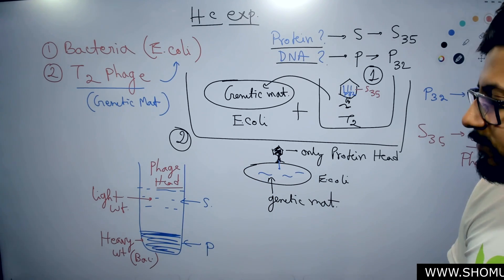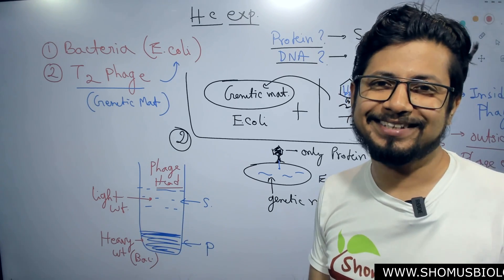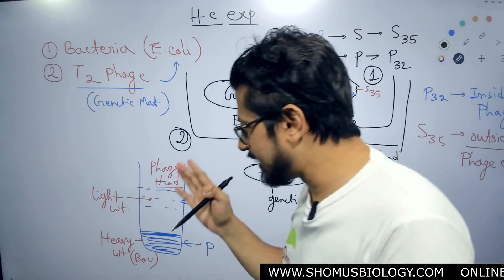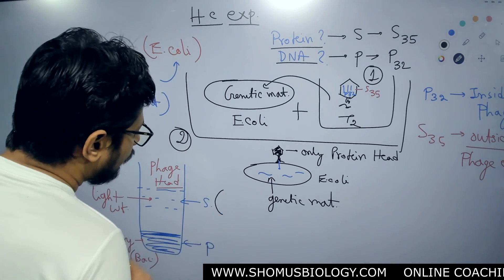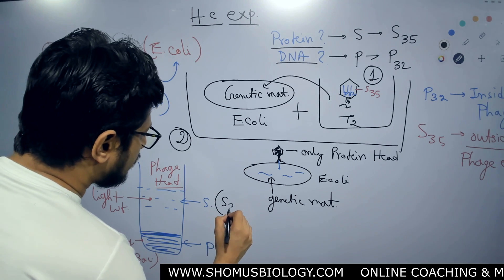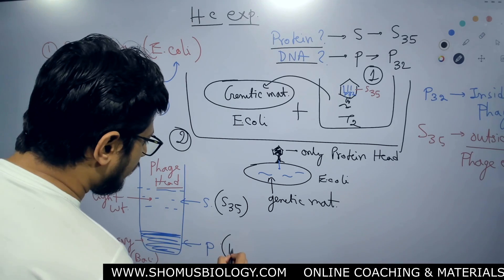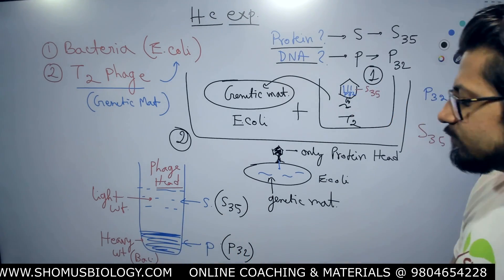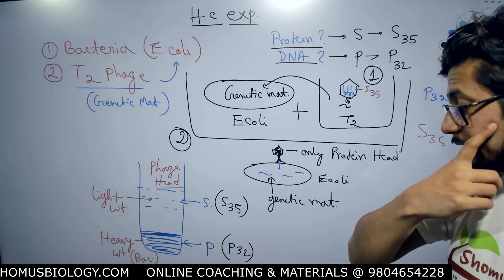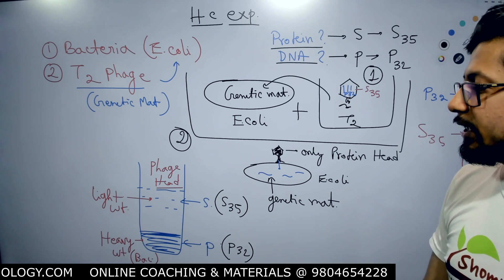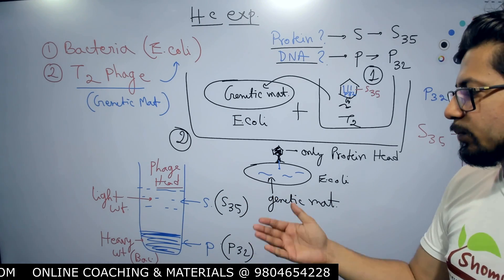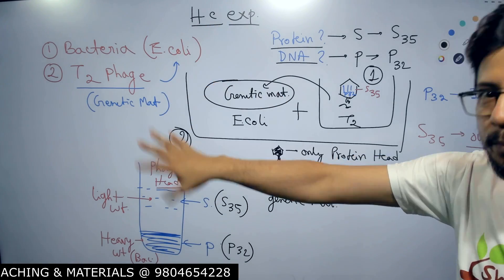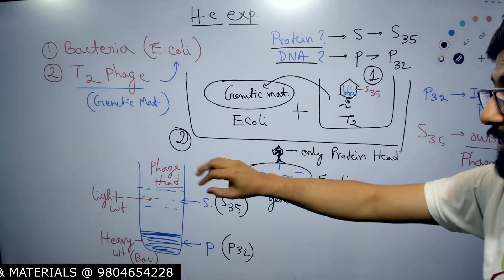After centrifugation is done, we check the radioactivity. This is the moment of truth. In the lightweight region — the supernatant — we are only finding S35. While in the pellet, we are finding P32. So P32-labeled radioactivity is found in the pellet, and none of the P32 activity is in the supernatant. The supernatant is showing only S35 radioactivity. Because we can differentiate between the radioactivity of S35 and P32, we can tell that whatever is in the supernatant had S35 — meaning it is a protein component.